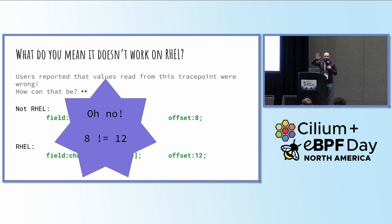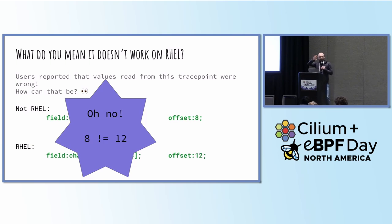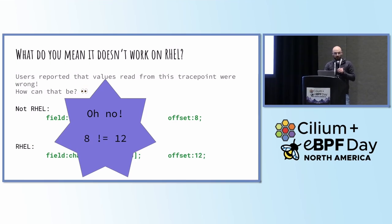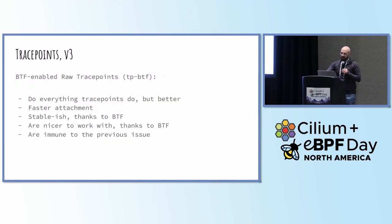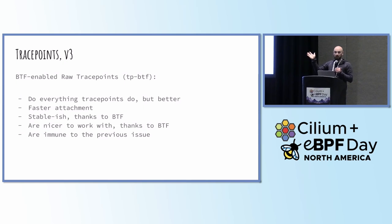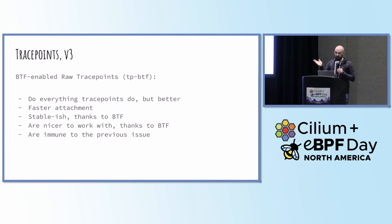We started digging and found that on non-RHEL, the offset is 8 — which is what we expected — but on RHEL, the offset is 12. And 12 is not 8. So all of our reads were off, causing our probe to just not work. It turns out in RHEL some work was done to merge the real-time patches with the kernel, so things are slightly different. If we'd stuck with vmlinux.h this would probably have been fine. But there have been at least two large increments to trace points since then: raw trace points, and my favorite — BTF-enabled raw trace points. These are faster, stable thanks to BTF, and they don't have the same offset issue.